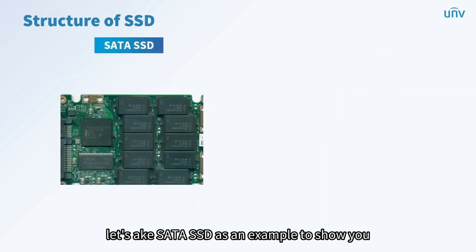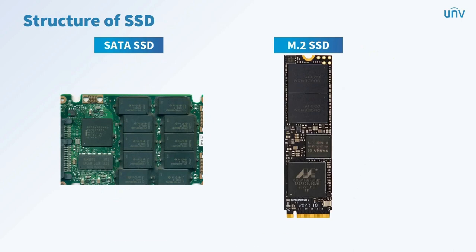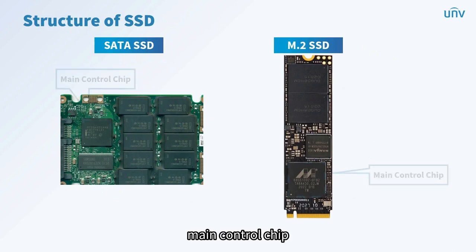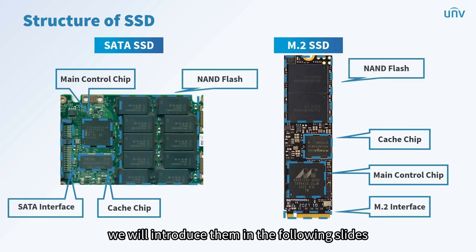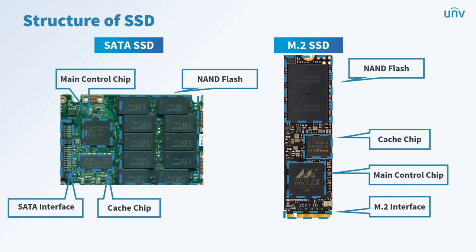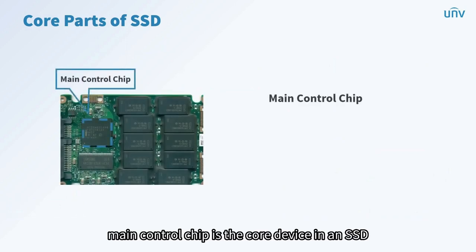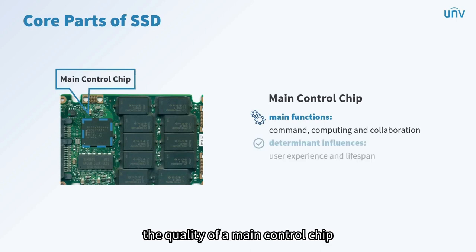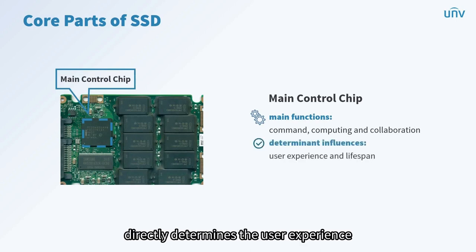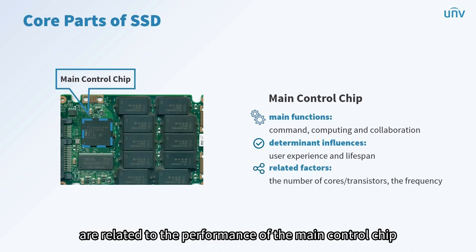Taking SATA SSD as an example, the main structure includes four highlighted parts: main control chip, cache chip, SATA interface, and NAND flash. The structure of M.2 SSD is similar. The main control chip is the core device in an SSD — like the CPU in a computer, it handles command, computing, and collaboration. The quality of the main control chip directly determines user experience and lifespan of an SSD. Different architectures, number of cores, transistors, and frequency are all related to its performance.